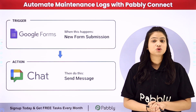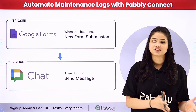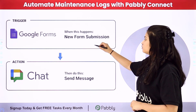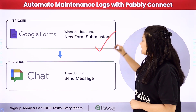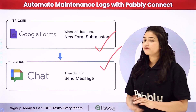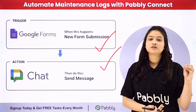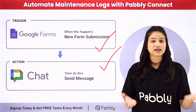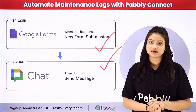Pably Connect works on two principles: Trigger and Action. In Trigger we are going to take Google Forms and in Action we are going to take Google Chat, and we will simply connect both of them to automate this entire process with the help of Pably Connect.